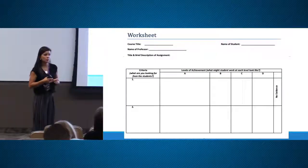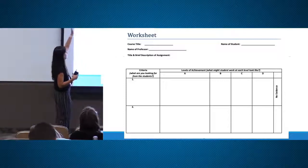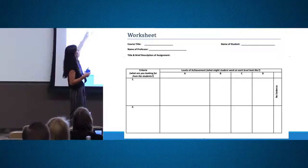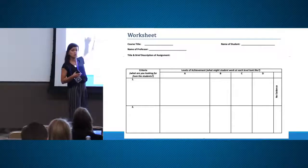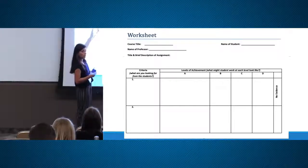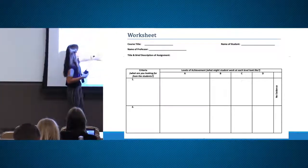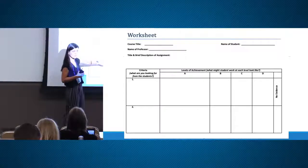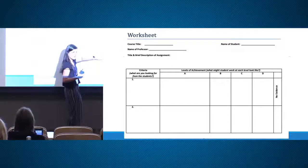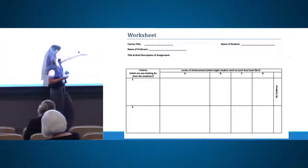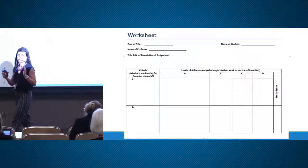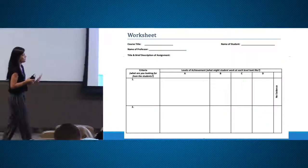This is a simple worksheet you can use with your course title, your name, the description of the assignment. The description of the assignment is where you put the objectives, and those objectives should line up with the components of your rubric. Here you have the criteria, good work, intermediate work, unacceptable work. You can choose between four and five criteria levels of achievement.